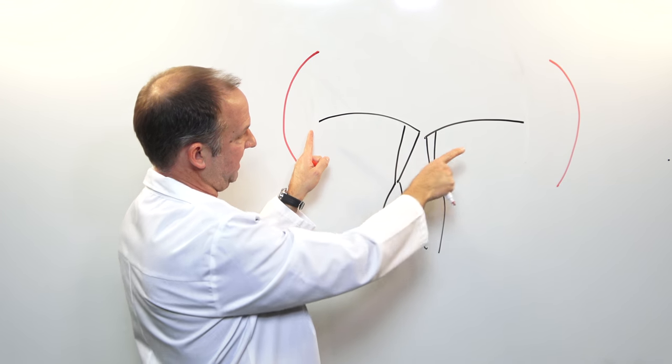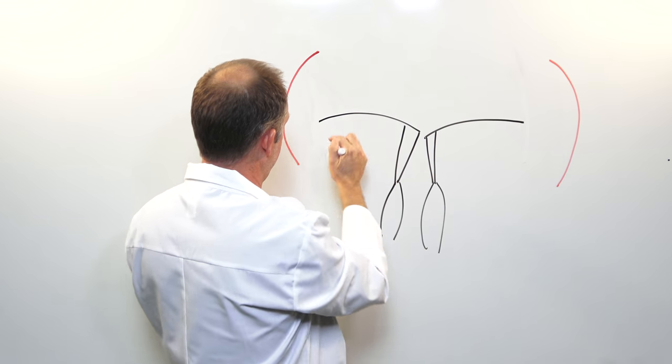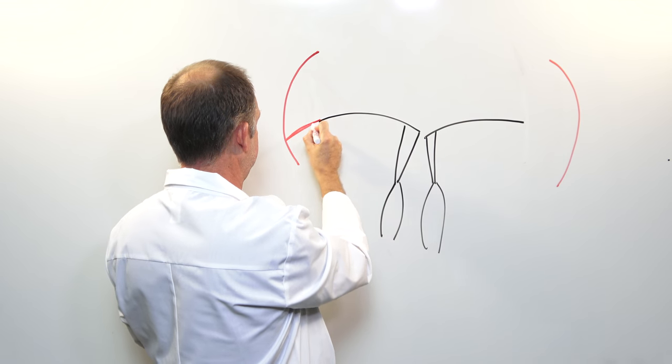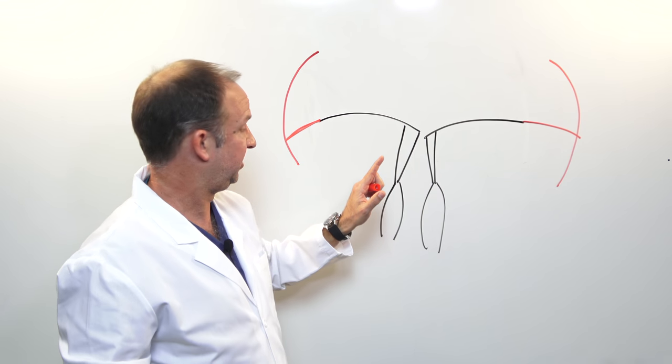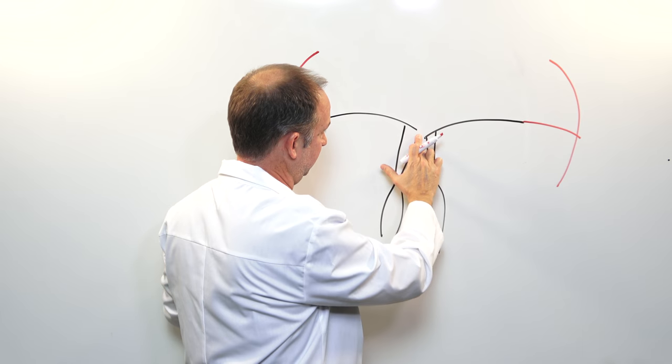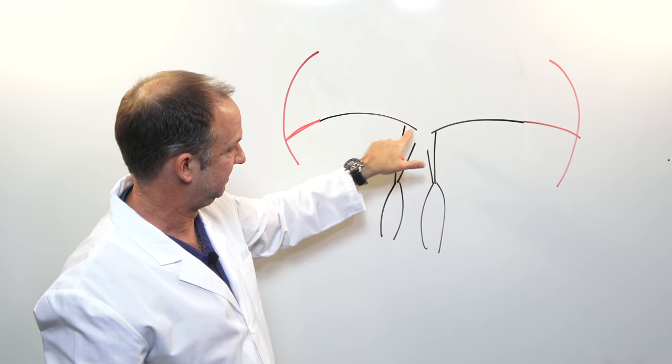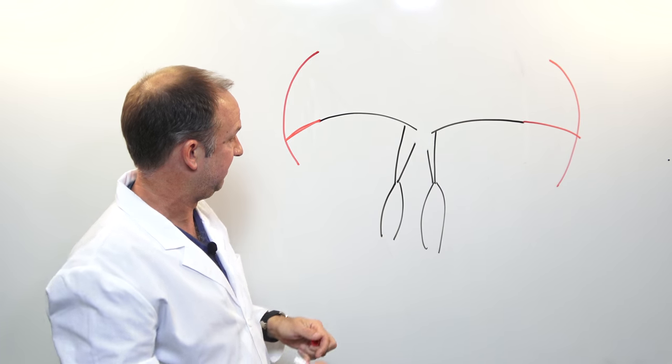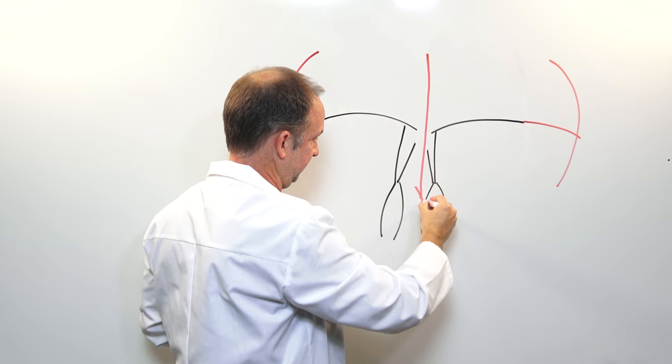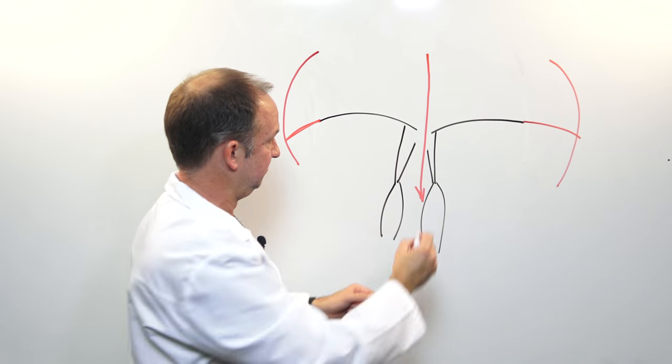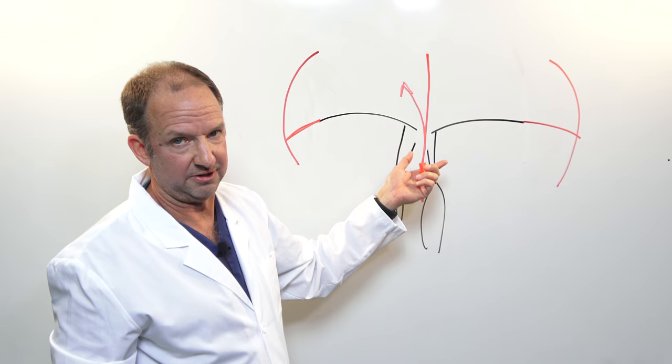Now the mitral valve, instead of being attached here, has moved to get attached over here. The size of the valve hasn't changed and therefore there's a gap between the two kissing points of the valve. That means that rather than blood moving in this direction, blood is able to move backwards, causing the mitral valve to leak.